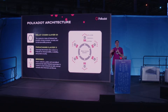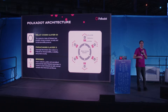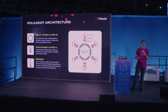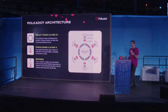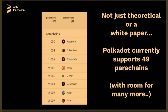The relay chain provides economic security and interoperability to the chains that connect to it. There are also parachains that connect to the relay chain and can do different things — we have AssetHub, Kilt for Identity, Moonbeam for EVM smart contracts, Astar for EVM and other smart contracts, SubSocial for social networking, Zeitgeist for prediction markets. There are 49 different parachains operating right now on Polkadot, and more coming all the time. This isn't theoretical — these have been running on Polkadot since 2021, and there is room for many more to join.